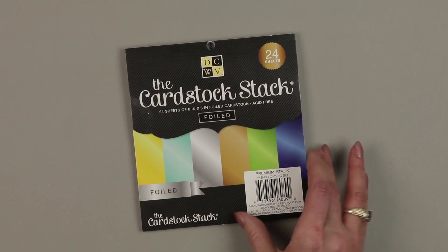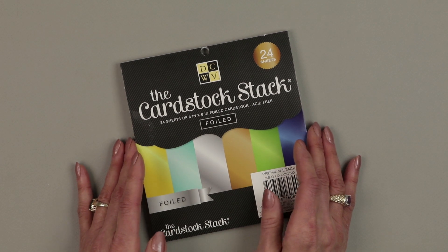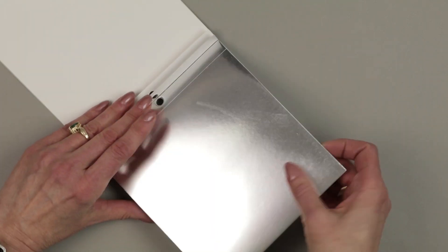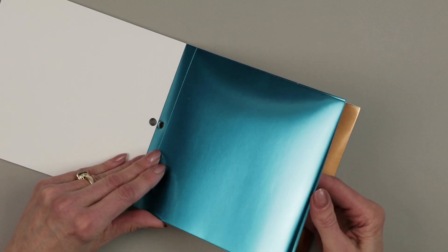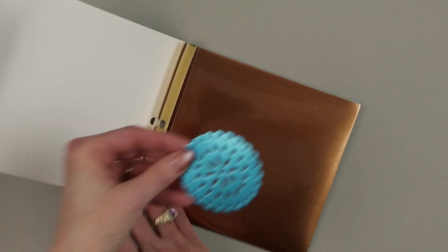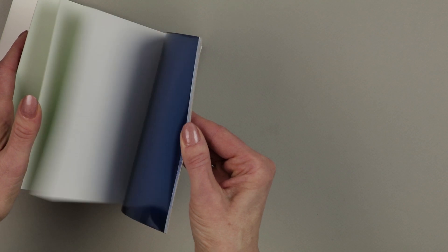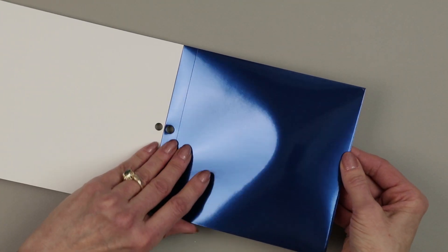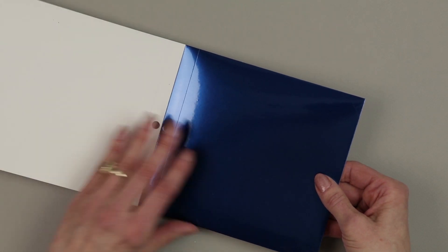You buy this card stock stack at Joann's. It's just foiled paper. It's so unbelievably simple. You can die cut it. I used my Cricut Explore Air and look at how beautiful. Look at how gorgeous, and you get perfect coverage every time. Now you won't be able to do all of the techniques using this paper, but for all of the cutouts this is the easiest way to go.